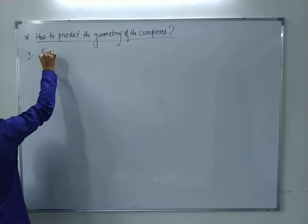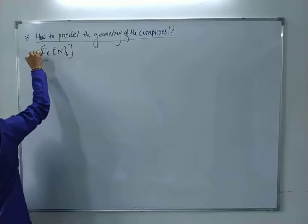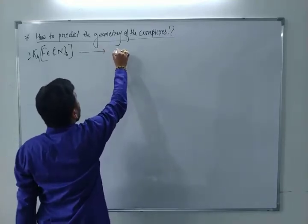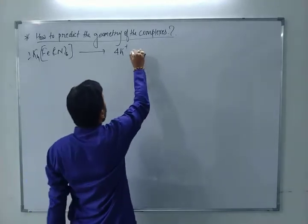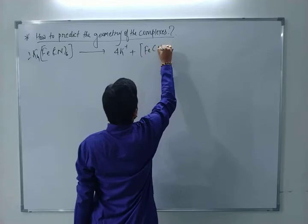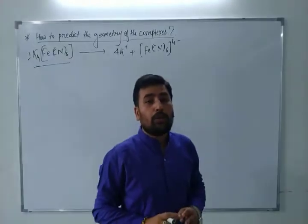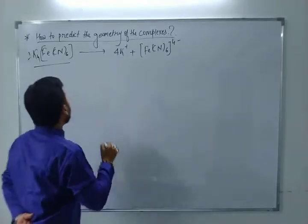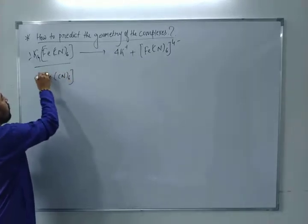So first of all, if this type of compound is given, what you have to do is write it as 4K⁺ plus [Fe(CN)6]⁴⁻. This compound is breaking into cation and anion. Now we have to predict the geometry of the complex [Fe(CN)6]⁴⁻.